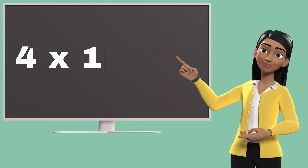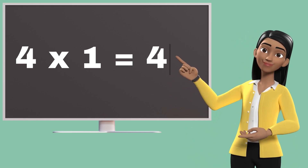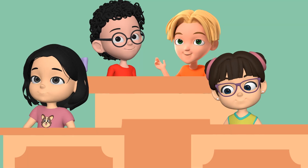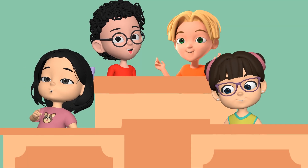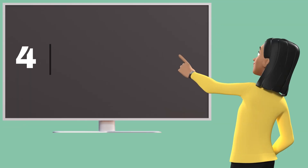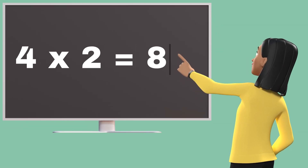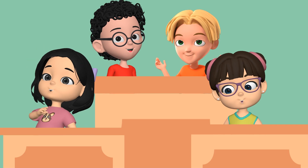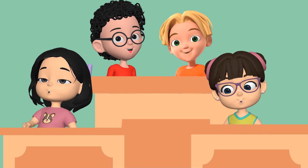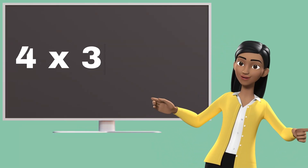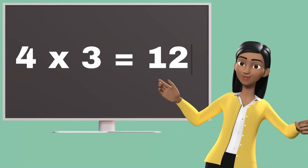Four ones are four. Four ones are four. Four twos are eight. Four twos are eight. Four threes are twelve.